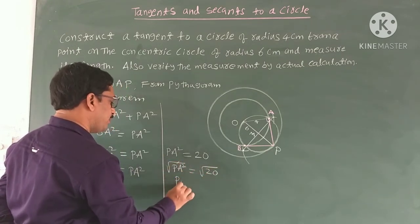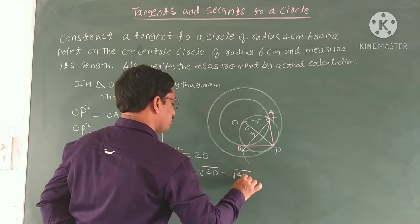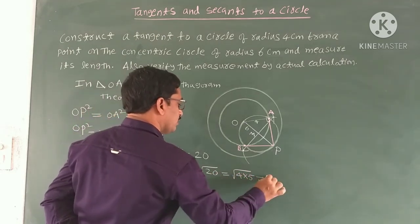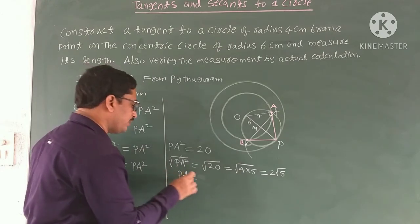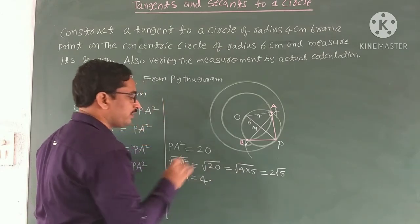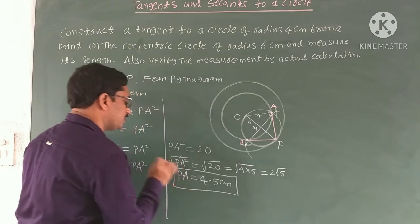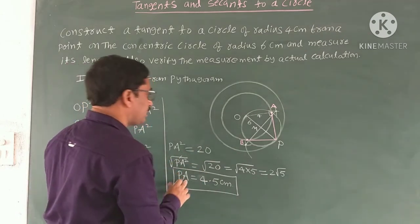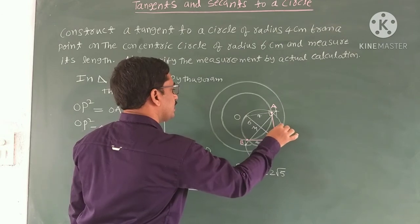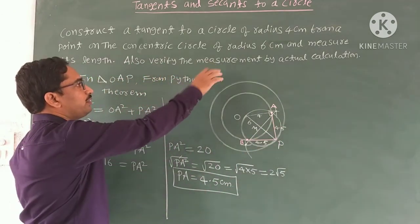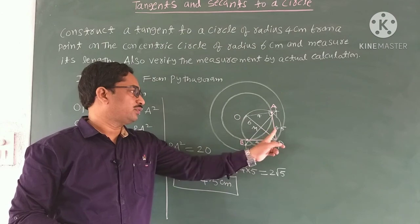PA = √20 = √(4 × 5) = 2√5 ≈ 4.47, which is approximately 4.5 cm. So the length of PA equals 4.5 cm. Not only PA, but the length of PB is also 4.5 cm because these are equal tangents. So by actual verification, PA = PB = 4.5 cm.